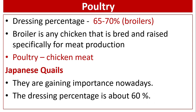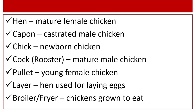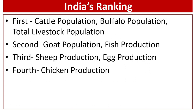Poultry: dressing percentage is 65 to 70 percent in broilers. A broiler is any chicken that is bred and raised specifically for meat production. Japanese quails are gaining importance nowadays, with a dressing percentage of about 60 percent. Hen means mature female chicken; castrated male chicken is known as capon; newborn chicken is known as chick; mature male chicken is known as rooster or cock; young female chicken is known as pullet. Hen used for laying eggs is known as layer; chickens grown to eat are known as broiler or fryer.